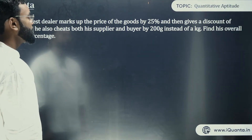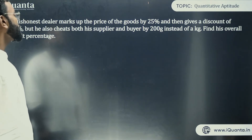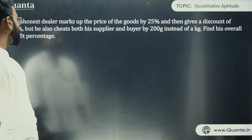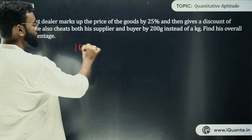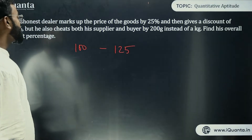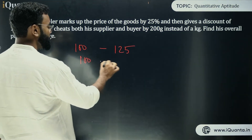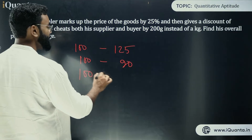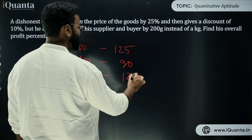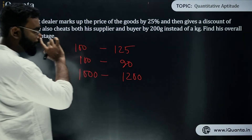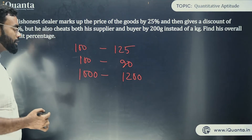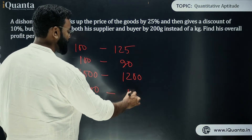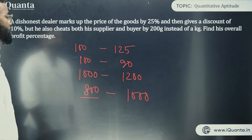Next question: a dishonest dealer marks up the price by 25% and gives a discount of 10%, but also cheats both his suppliers and buyers by 200 grams per kg. Find his overall profit percentage. Markup: 100 → 125. Discount: 100 → 90. Cheating the supplier: buying 1200 grams for the price of 1000, so 1000 → 1200. Cheating the buyer: selling 800 grams as 1000 grams, so 800 → 1000.